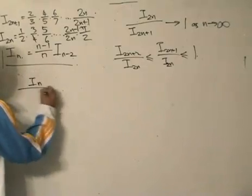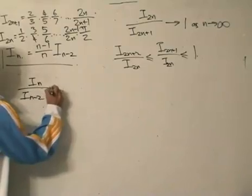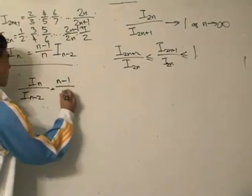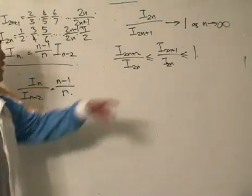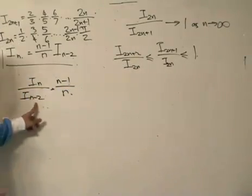Now rewriting this, I got i_n divided by i_(n-2) equals n minus 1 divided by n. Now this one is 2n plus 2, this one is 2n, but I got a minus here, it's not a problem.